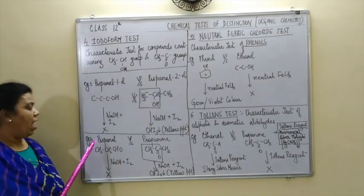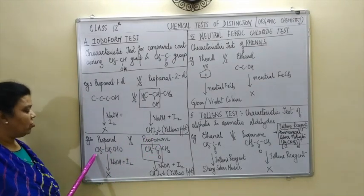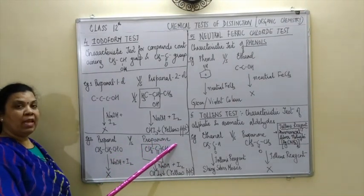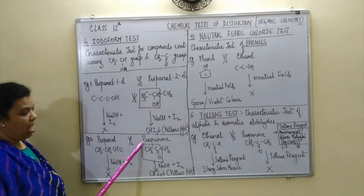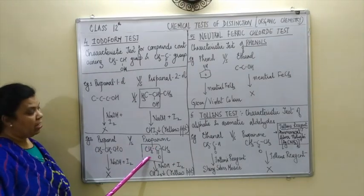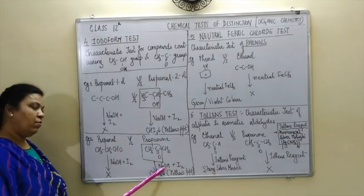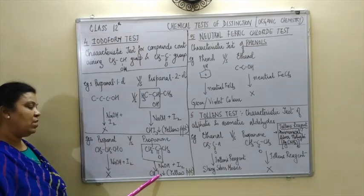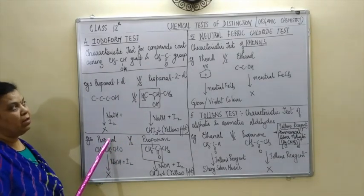The iodoform test can also be used to distinguish between propanal and propanone. The structure of propanal is CH3CH2CHO and propanone — whose trivial name to remember is acetone — has the structure CH3COCH3. Look at the structure and locate the CH3CO methyl ketone group: it is present in propanone but absent in propanal. So on addition of the iodoform test reagent, which is NaOH and I2, you will get a yellow precipitate of CHI3 (iodoform) in case of propanone, but no such precipitate will appear in case of propanal.